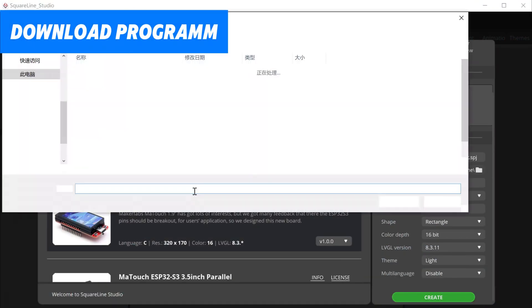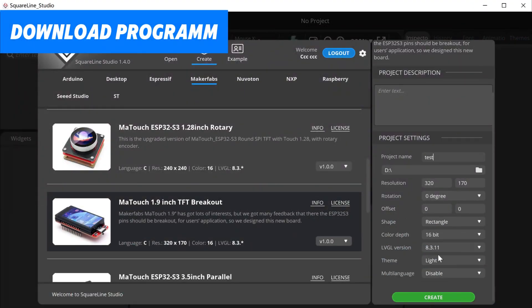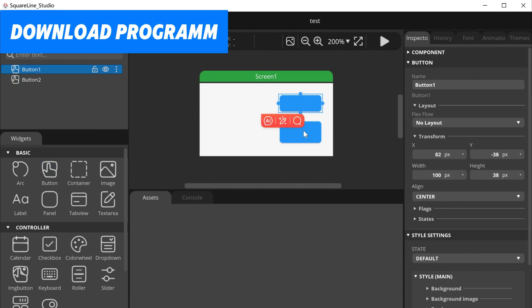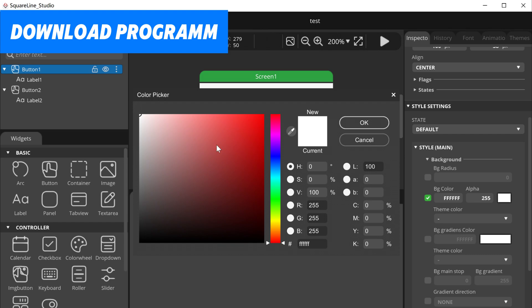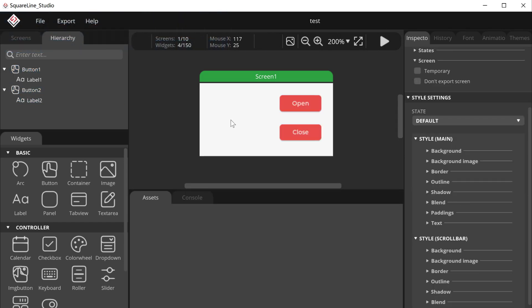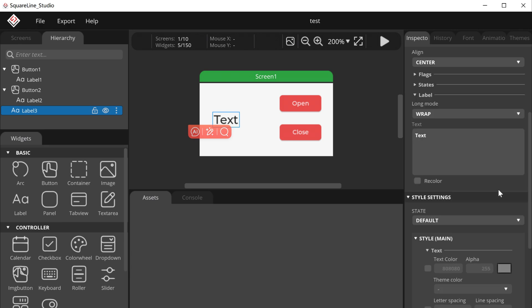We use Arduino and LVGL to program Maytouch. First, open the SquareLine software, create a project, and according to your own style, design the page, and finally output the UI file as well as create a template project.